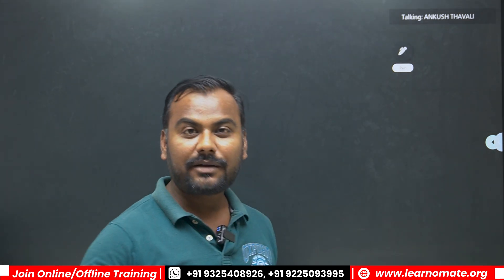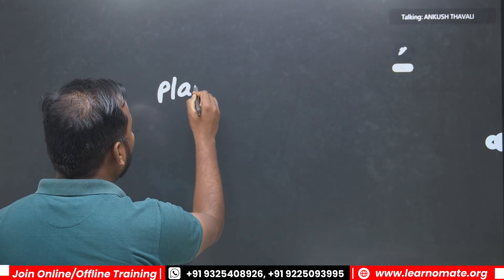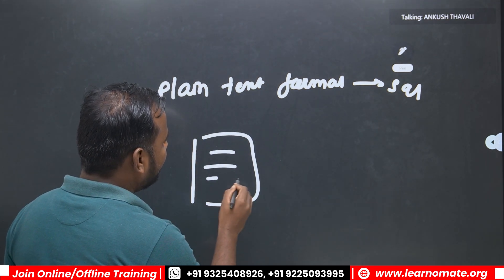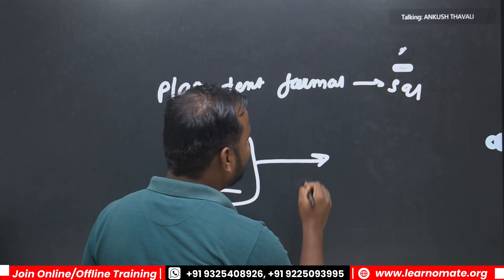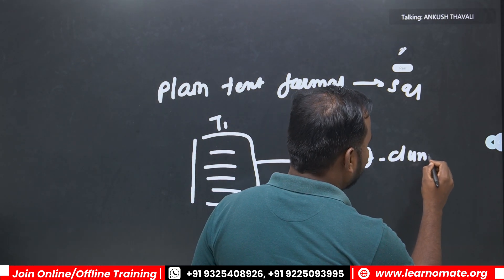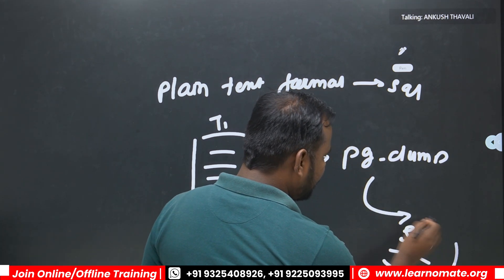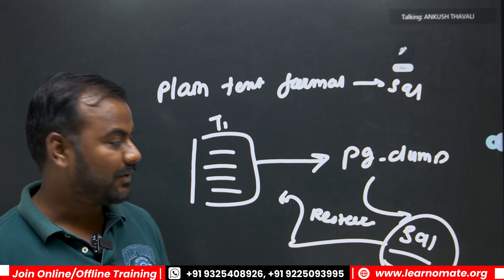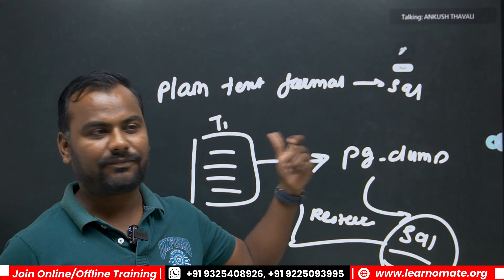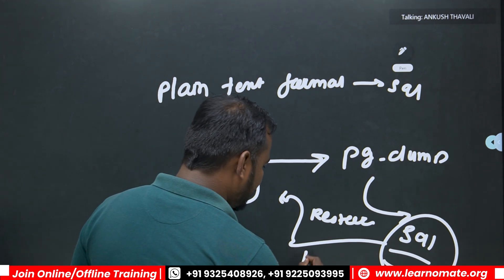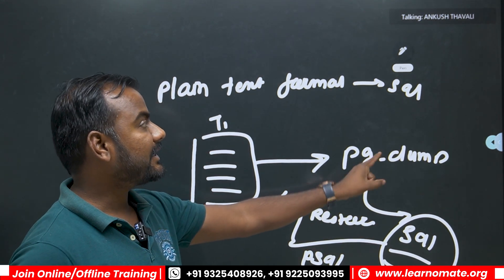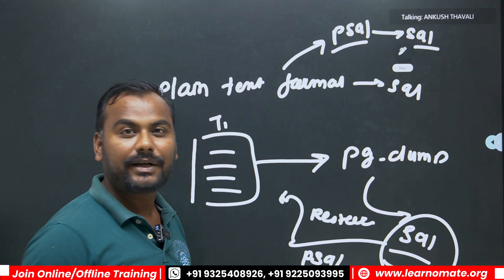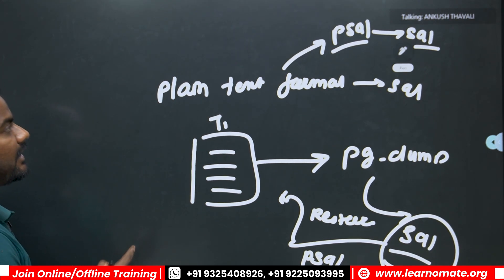Another importance of pg_dump is that you can have a backup in different formats. For example, plain text format — just like a SQL file. If I have a T1 table with some records and use the pg_dump utility to take the backup, it will create a SQL file. This SQL file can be used for restoration purposes. For restoration of a plain text format backup, you use the psql utility, providing it that SQL file.